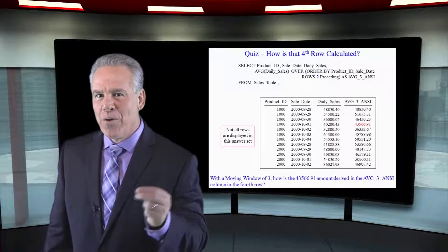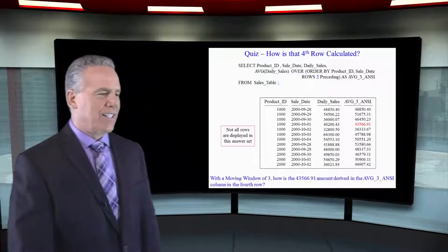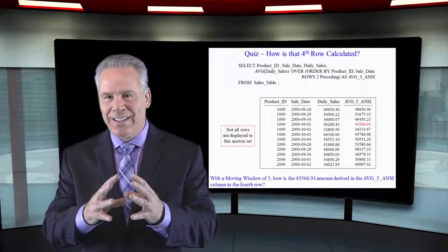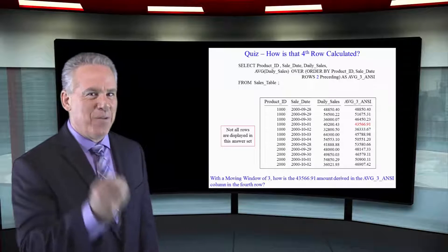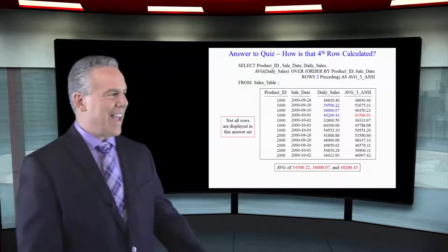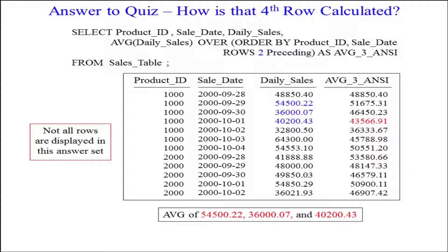How was the fourth row calculated in our answer set — 43,5, 66, 91? Give me the three daily sales that were brought together to give me that moving average. This is how the fourth row was calculated: the current row of 4,200, the previous row of 36,000, and before that it was 54,5. It's always the current row and the previous rows based on that moving window.